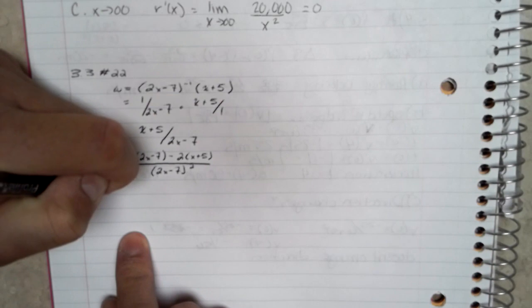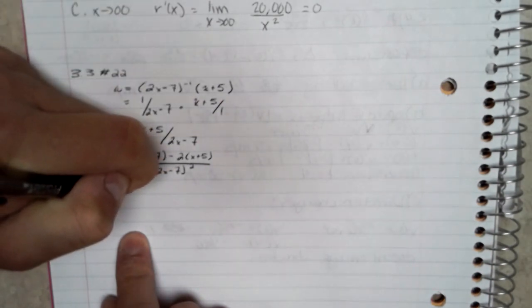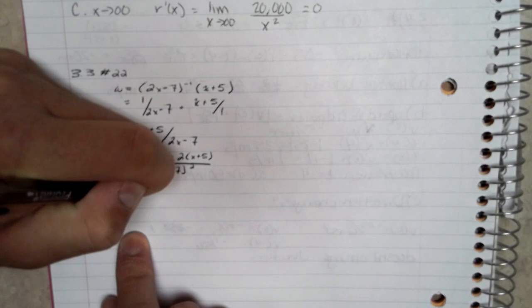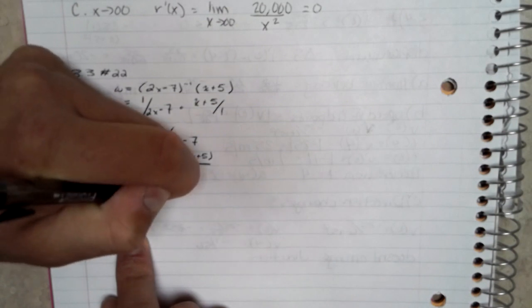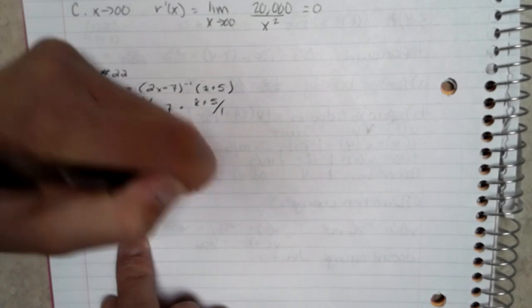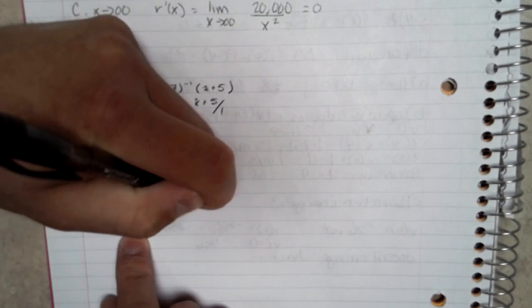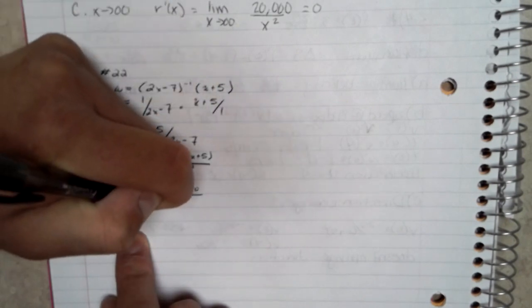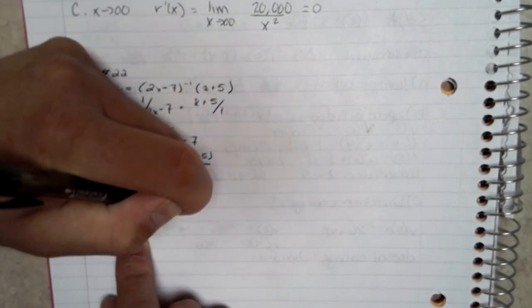From there, the numerator becomes (2x minus 7) minus (2x plus 10), all over (2x minus 7) squared.